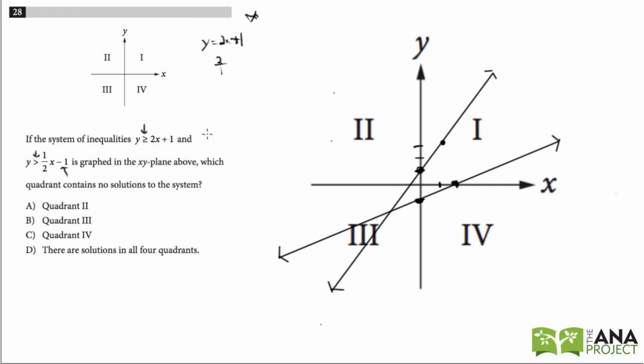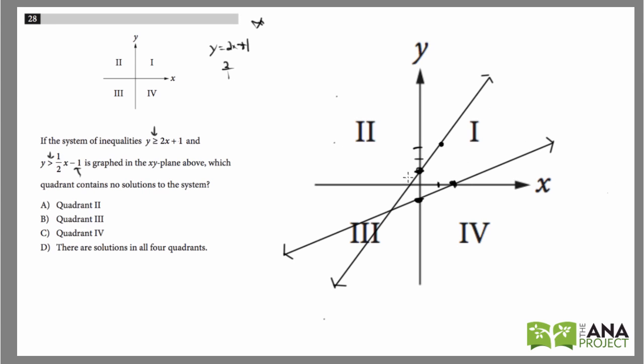So it says which quadrant contains no solutions to the system above. So basically it has to be greater than this line and this line. So if we look at quadrant 1, this area in quadrant 1 is greater than both lines. If we looked at this area, it would be greater than this line but less than this line. So that wouldn't work. But we found an area in quadrant 1 that's greater than both lines. So quadrant 1 is a solution to the system.